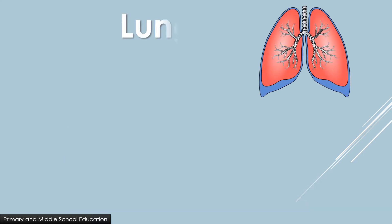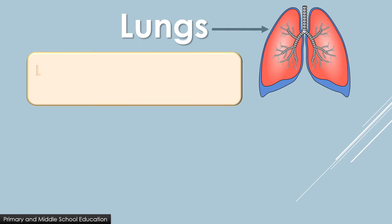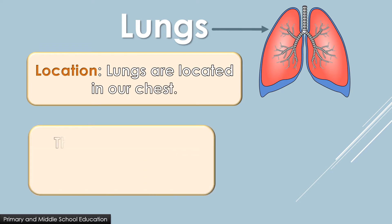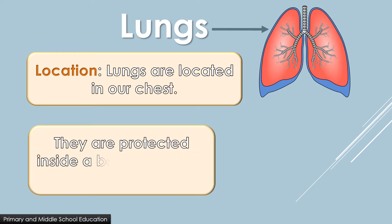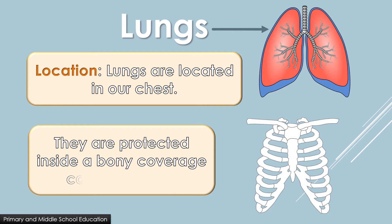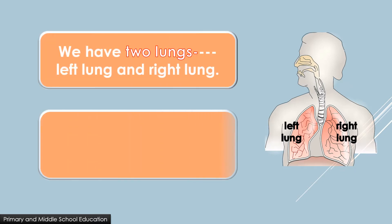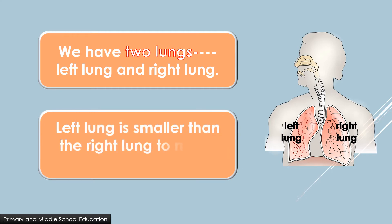Now let us learn about lungs. Location: lungs are located in our chest. They are protected inside a bony coverage called the ribcage. We have two lungs — left lung and right lung. The left lung is smaller than the right lung to make room for the heart.